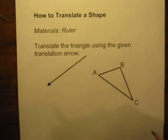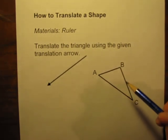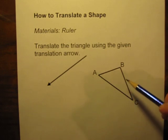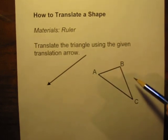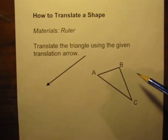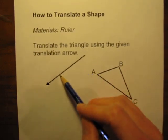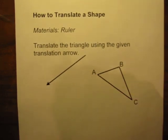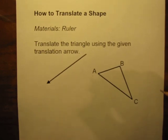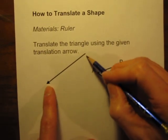First up, whenever you're going to do these translations, you need to know two things. You need to know, first of all, which direction are you going to move the shape or move the object. And that's given by the direction of the arrow here. And you also need to know how far are you going to move the object, and that's given by the length of the arrow.